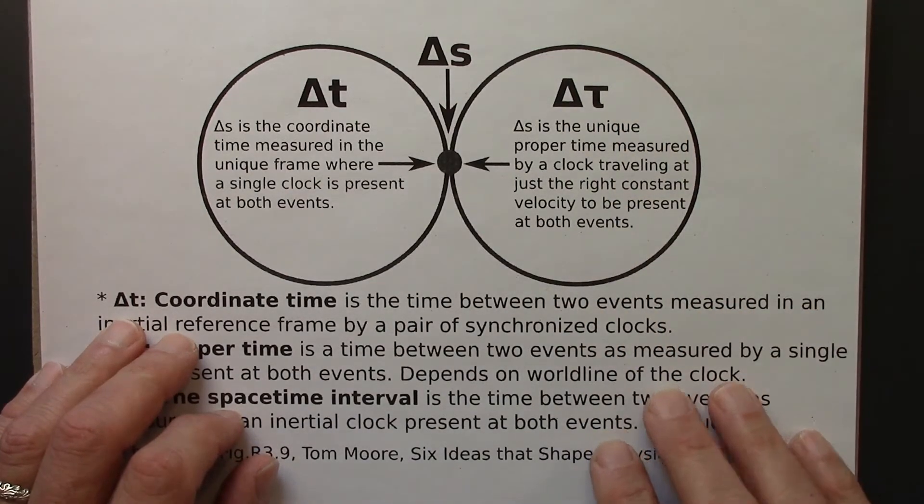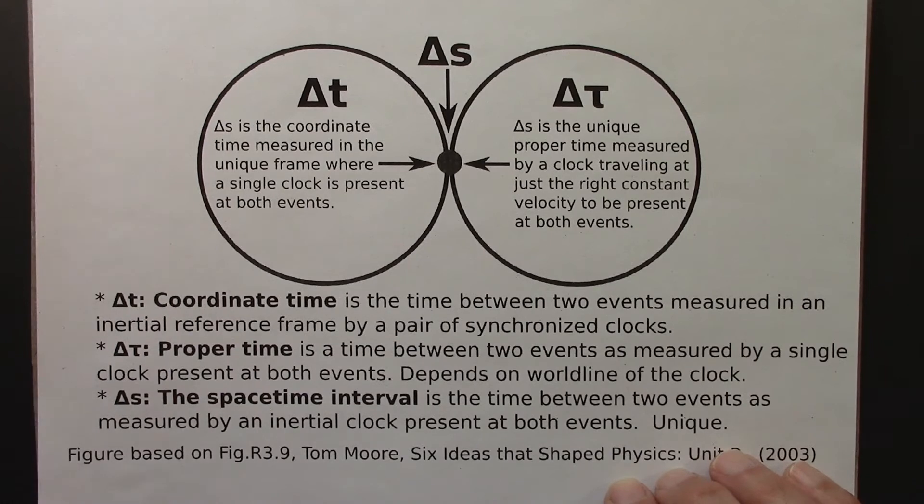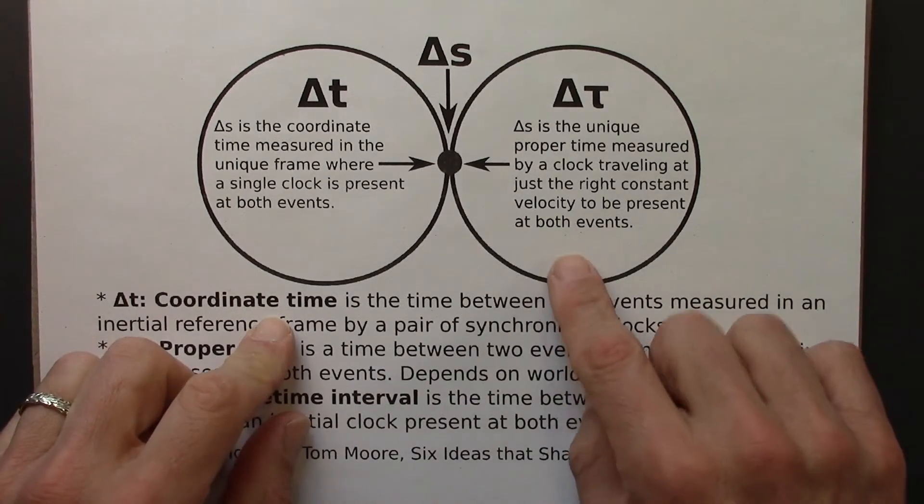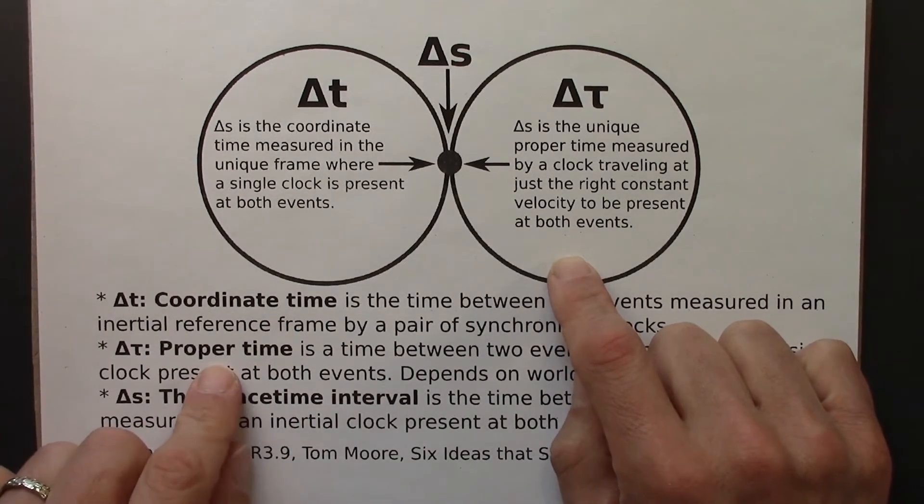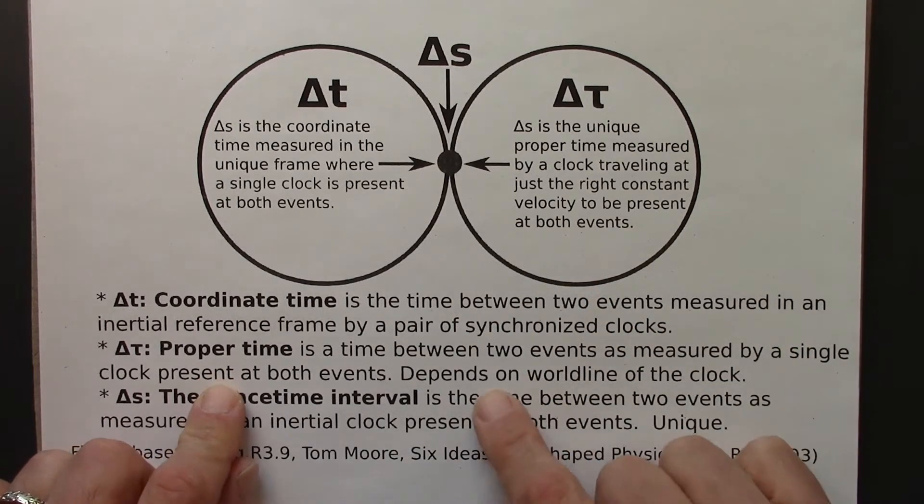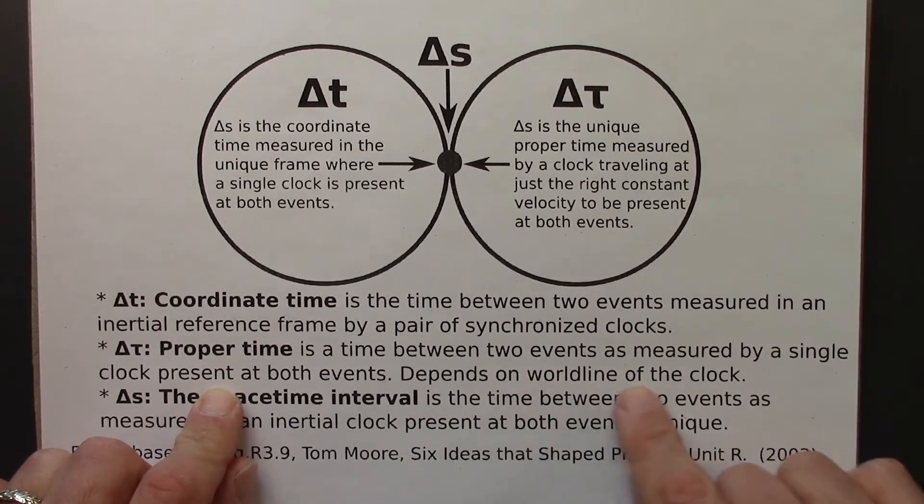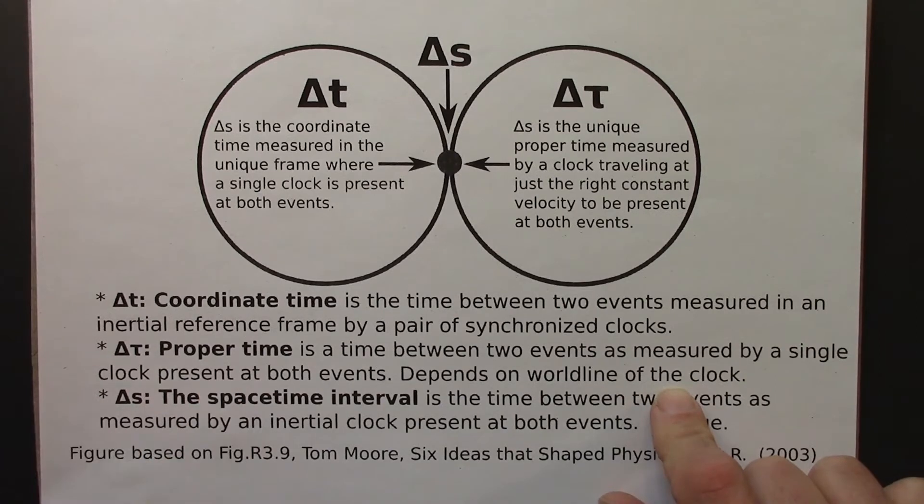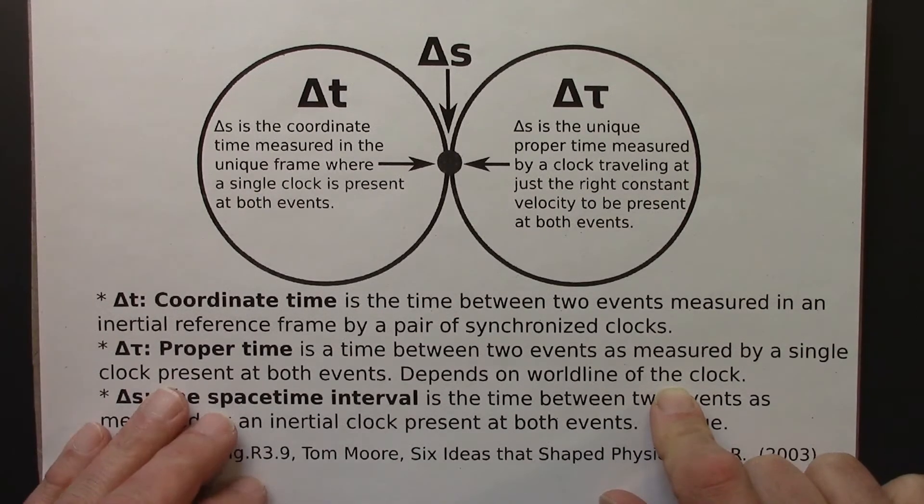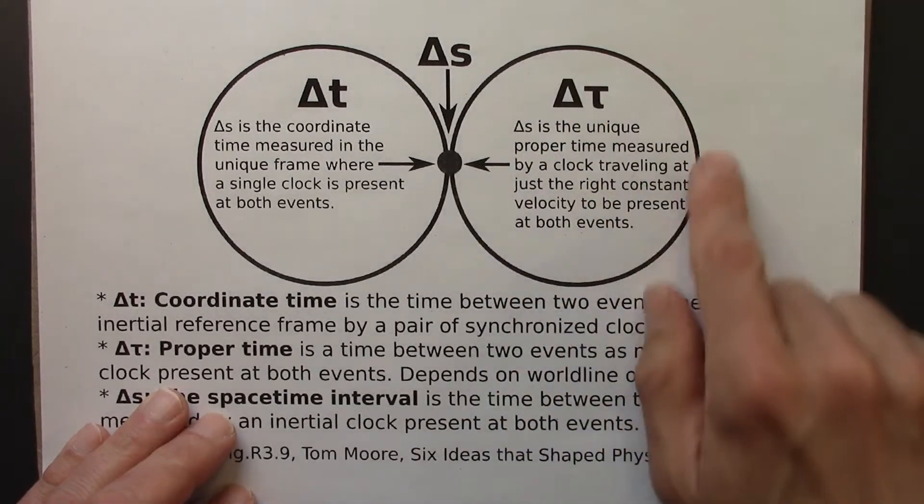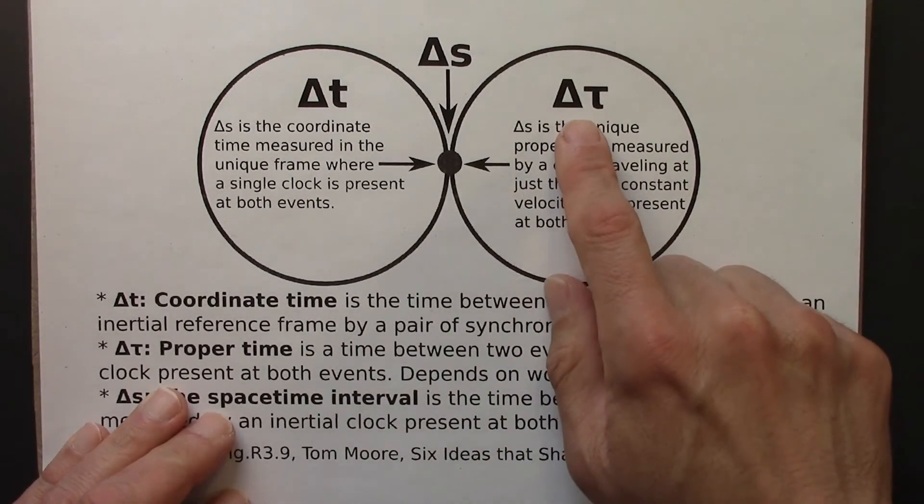So the proper time is just the time measured by a clock that's present at both events. But of course, there's lots of world lines that could connect events a and b, just like there's lots of paths in space that connect points a and b in space. And so for every world line, we'll get a different delta tau.